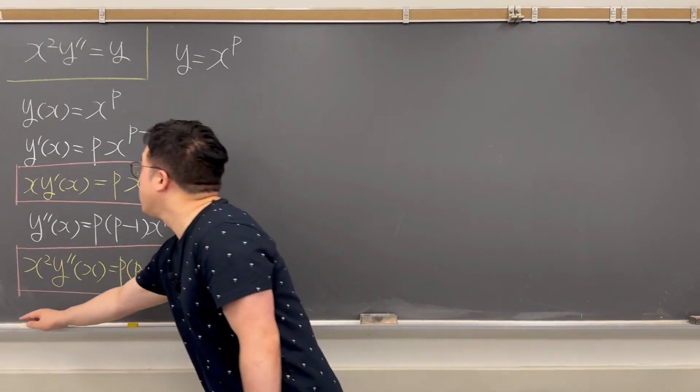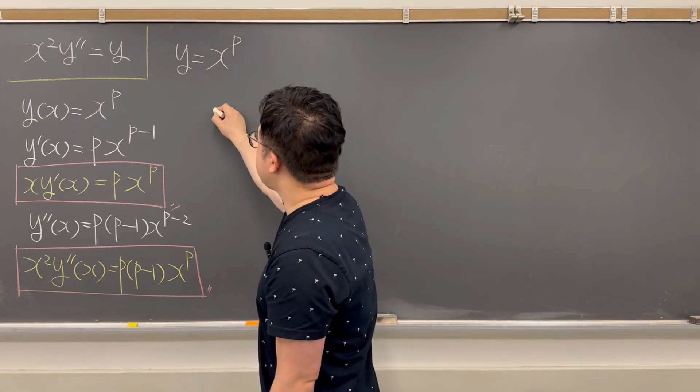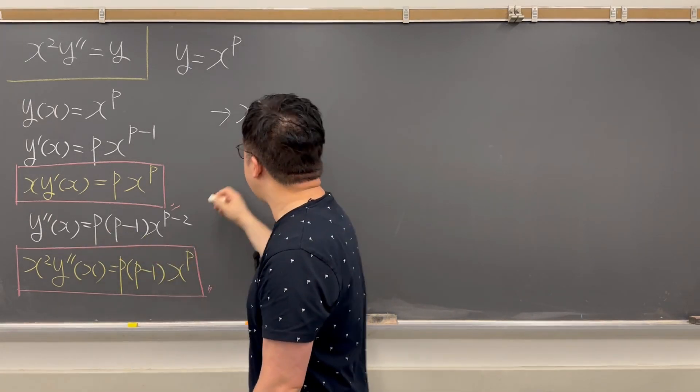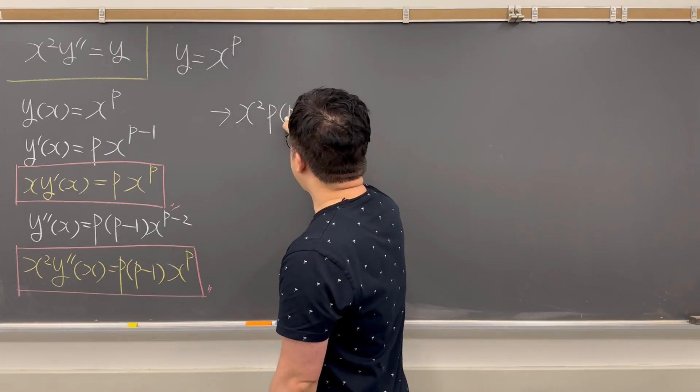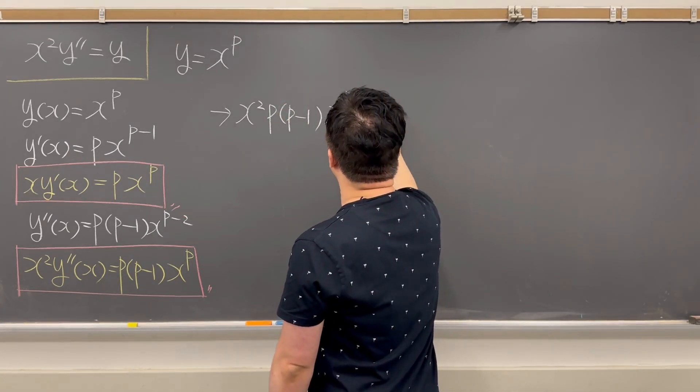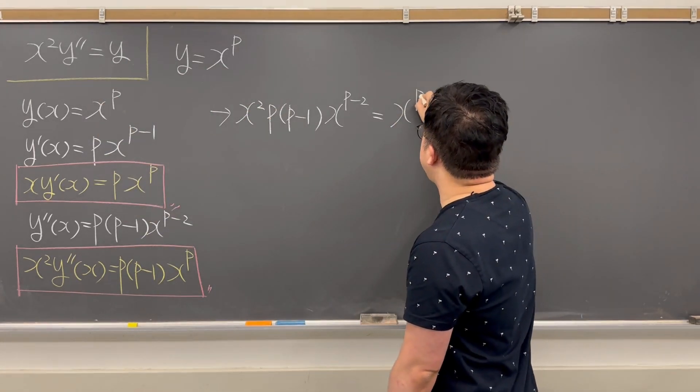So our case, now, we have x squared y double prime on the left-hand side. So it is going to be the same as now x squared, and then y double prime is p times p minus 1, and then x to the power of p minus 2, which is equal to y, that is x to the power of p.